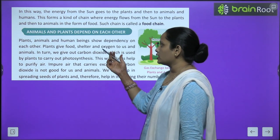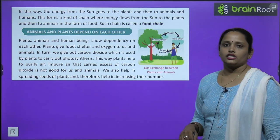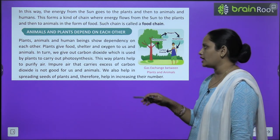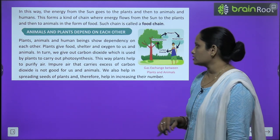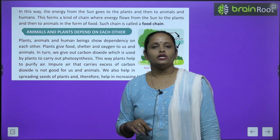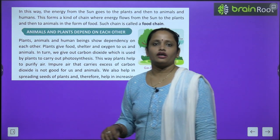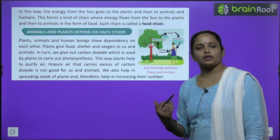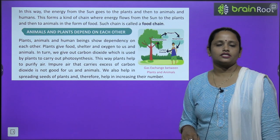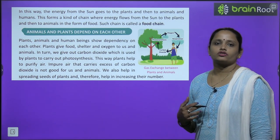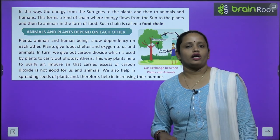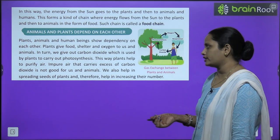Plants, animals, and human beings show dependency on each other. Plants give food, shelter, and oxygen to us and to animals. In turn, we give them carbon dioxide, which is used by plants to carry out photosynthesis. This way, plants help to purify the air.